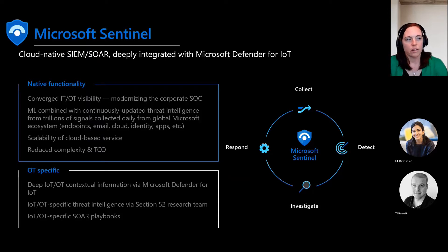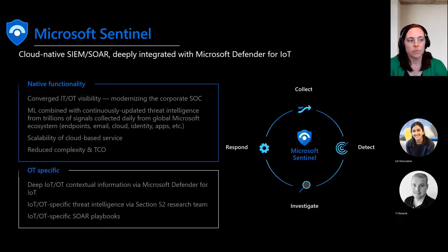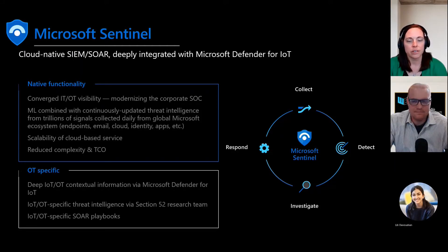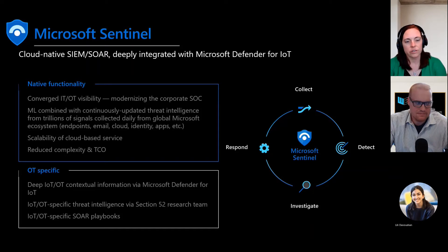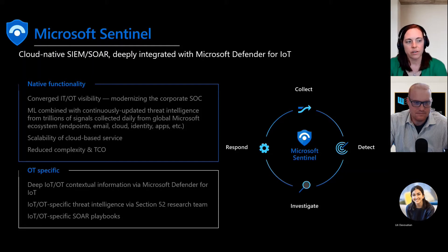Everything comes together with Microsoft Sentinel, which provides intelligent security analytics at cloud scale for your entire enterprise. This modernizes corporate visibility of IT and OT in one tool, with machine learning combined with continuously updated threat intelligence from trillions of signals collected daily from global Microsoft ecosystems like email, cloud, and apps. Sentinel also offers scalability and reduced complexity. For OT specifically, it provides deep IoT/OT contextual information via Microsoft Defender for IoT, IoT and OT specific threat intelligence via the Section 52 research team, and specific SOAR playbooks.